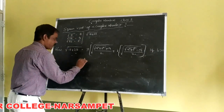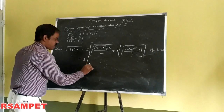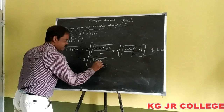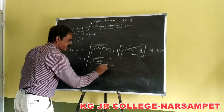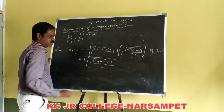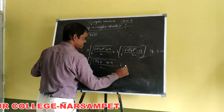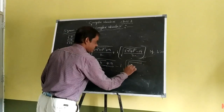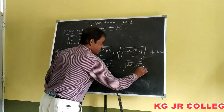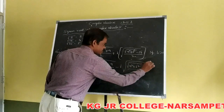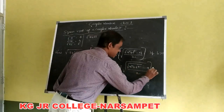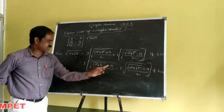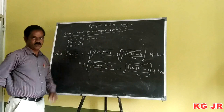For B less than 0, the formula becomes plus or minus of square root of (square root of A squared plus B squared, plus A) divided by 2, minus i times square root of (square root of A squared plus B squared, minus A) divided by 2.